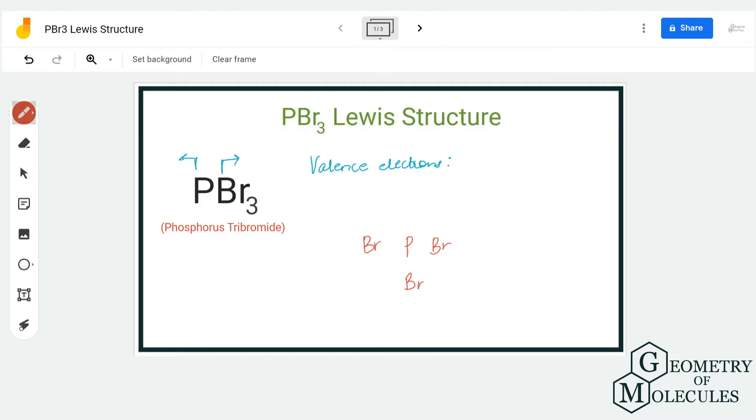Here there are three bromine atoms and one phosphorus atom. The bromine atom has seven valence electrons in its outer shell, whereas the phosphorus atom has five valence electrons in its outer shell.